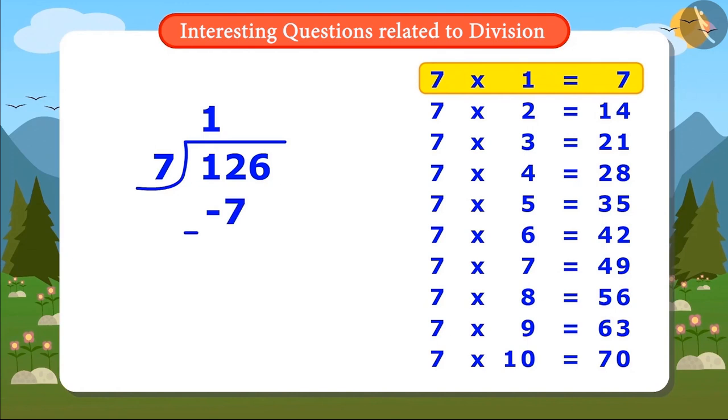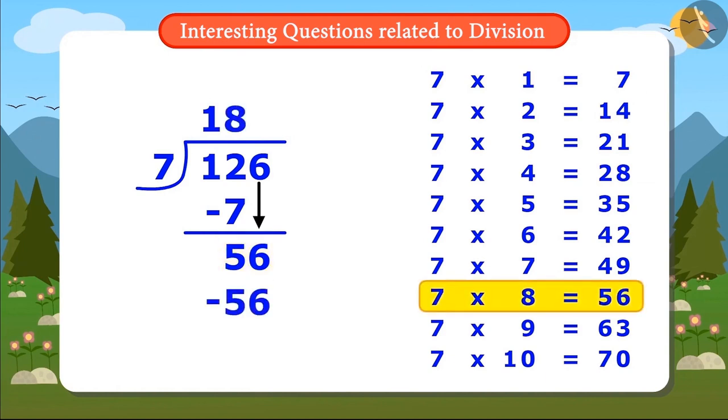7 ones are 7. Left 5, right? Let's write down 6. So it's 56. There are 7 eights are 56. Remainder 0.